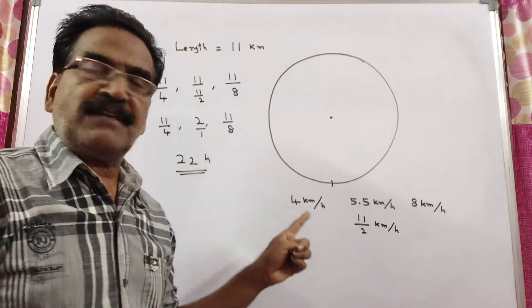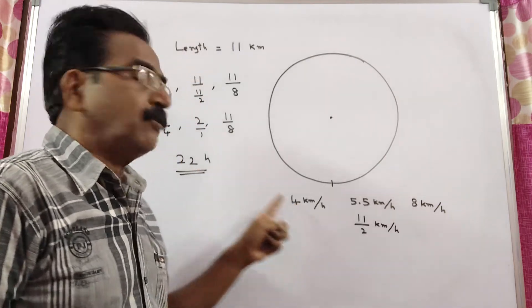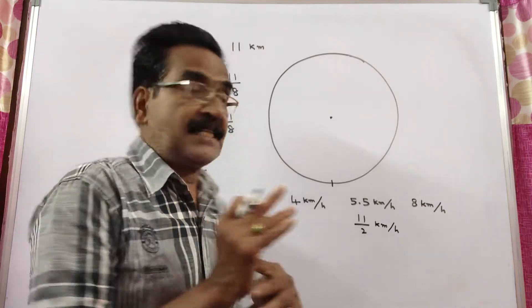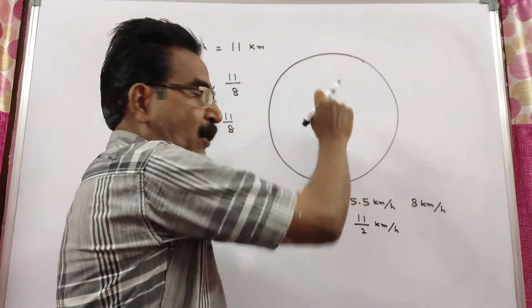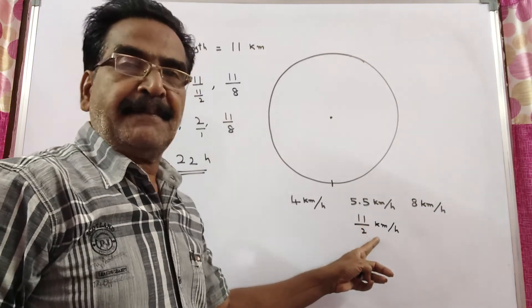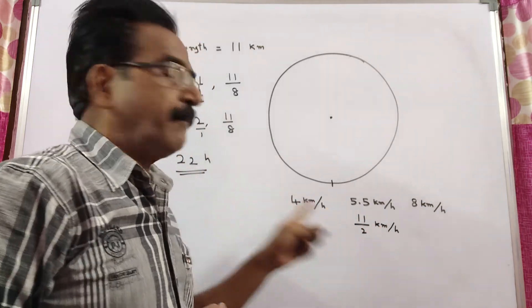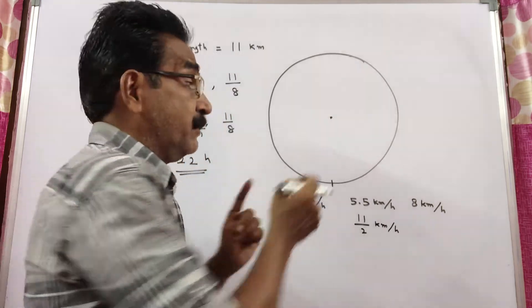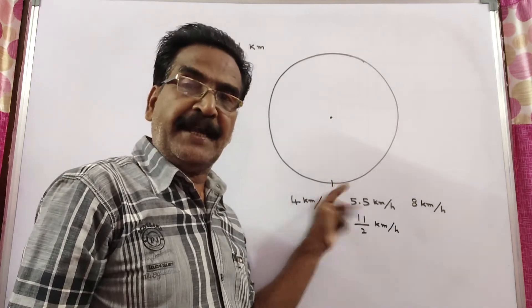In 22 hours, the first man travels 88 kilometers, completing 8 rounds. The second man travels 22 × 11/2 = 121 kilometers, completing 11 rounds and returning to the starting point.